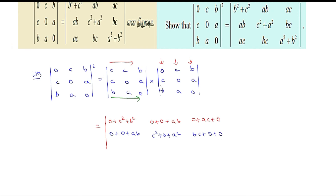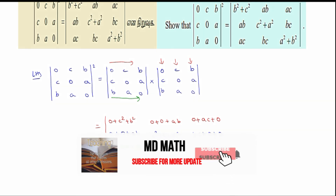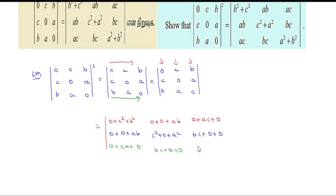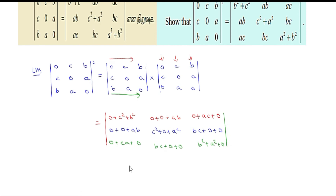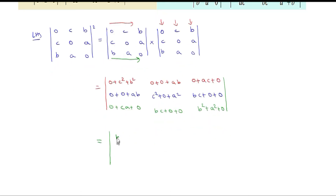Third row, first column gives 0 plus CA plus 0. Third row, second column gives BC plus 0 plus 0. Third row, third column gives B squared plus A squared plus 0. So, on further simplification, the answer determinant becomes: B squared plus C squared, AB, AC; AB, C squared plus A squared, BC; CA, BC, A squared plus B squared.